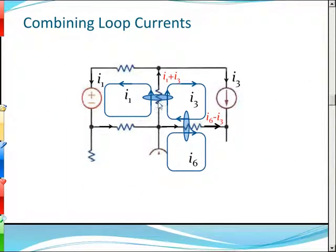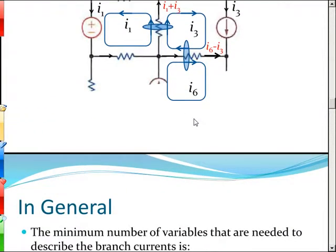I'm showing you how loop currents combine. This loop current flows through this cross section in an upward fashion, and this loop current also flows upward — so they combine additively. In another case, I6 is in the same sense as the current going this way, but I3 is flowing in the opposite sense, so the total current flowing this way is I6 minus I3.